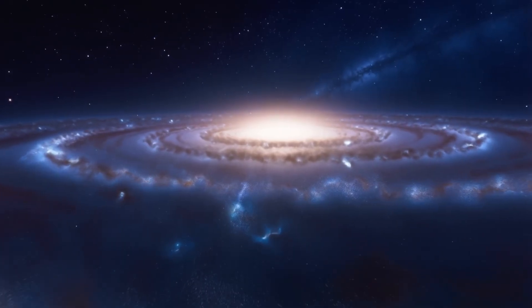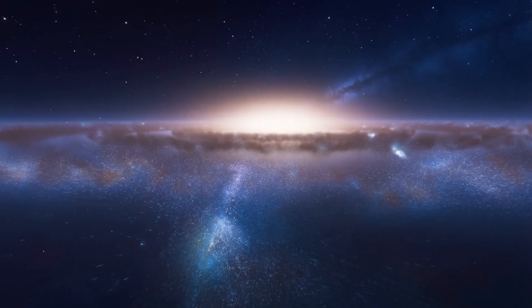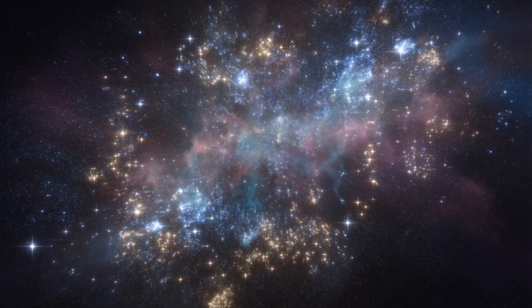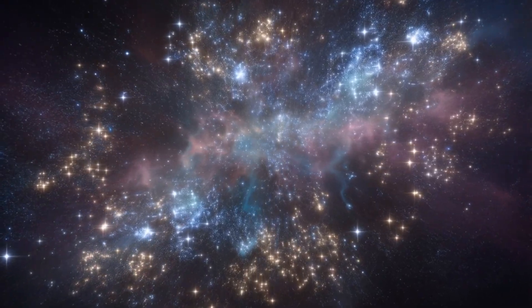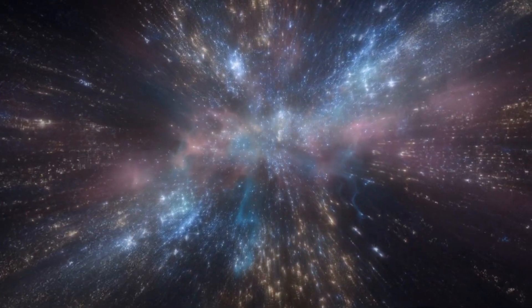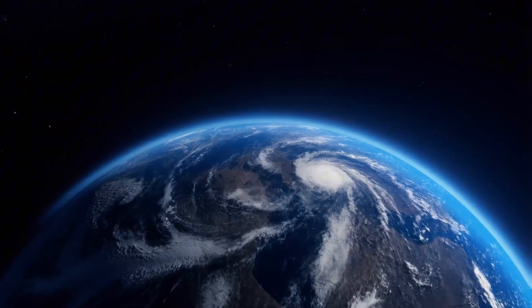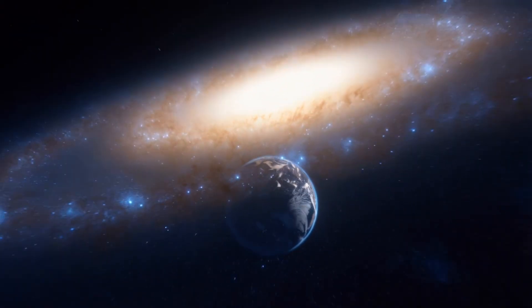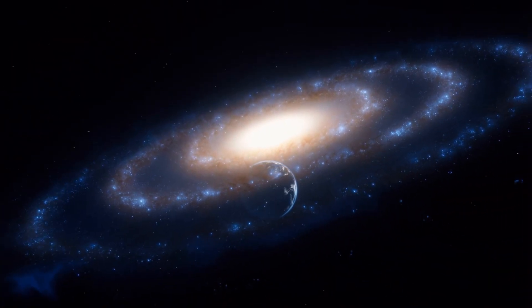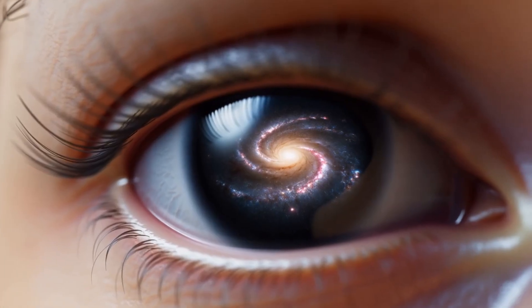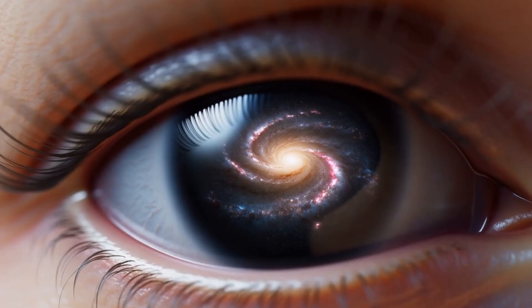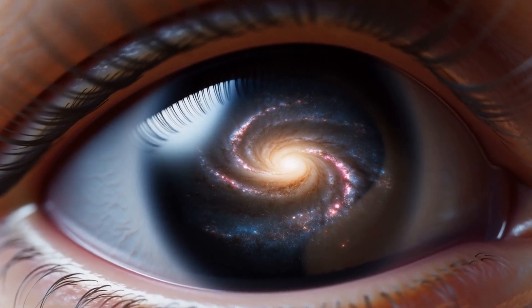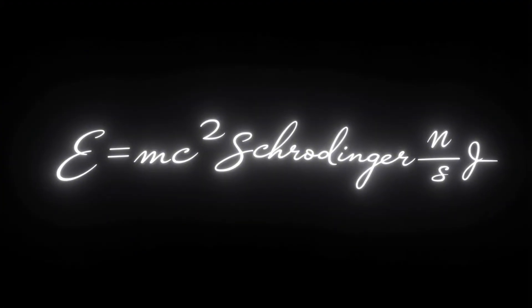Physicist John Archibald Wheeler famously said, 'It from bit,' meaning everything physical emerges from the bit, the most basic unit of information. If Wheeler was right, then the Big Bang wasn't just the beginning of matter but the initial boot up of a system with rules, structure, and feedback loops. So what does this mean for us? It means that your memories, your experiences, your choices are not just electrical patterns in your brain. They are configurations of information in a system that is much larger than we can comprehend. It also means that time may not be what we think it is. In an informational universe, time is not a flowing river but a sequence of states, like frames in a simulation. And if that's true, the past may still exist in some form, and so might the future.